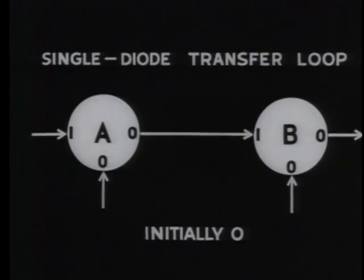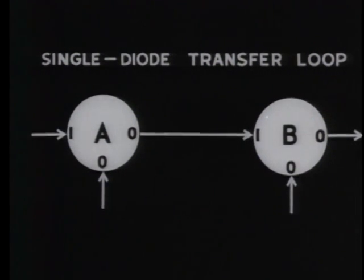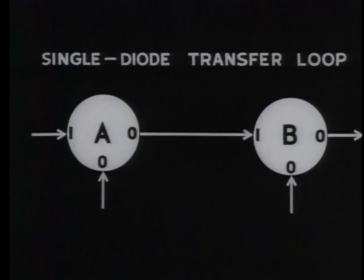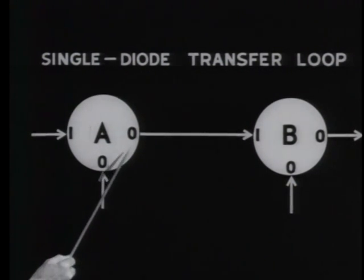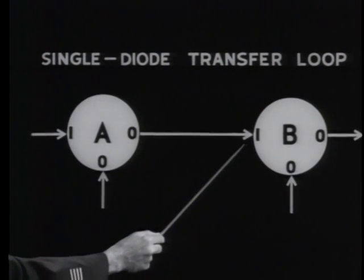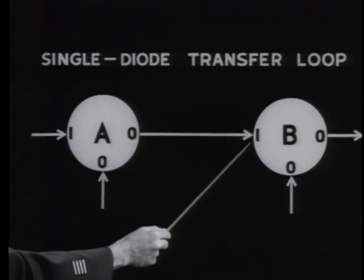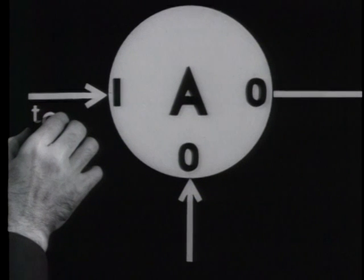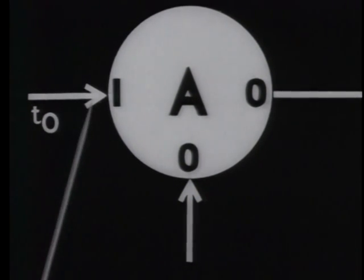In the single diode transfer loop, we assumed that both cores were initially in the binary zero state. A non-dot input pulse switched core A to the binary one state without affecting core B. Later, a dot pulse applied to the shift winding cleared core A back to zero. The flux change in core A produced an output pulse that traveled along to the input winding of core B, entering it on the non-dot side and switching core B to binary one. Thus, at time T0, we stored a binary one in core A.